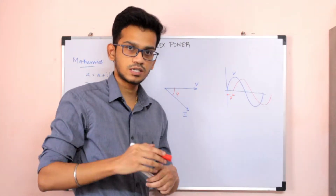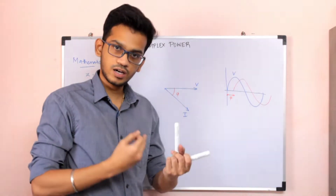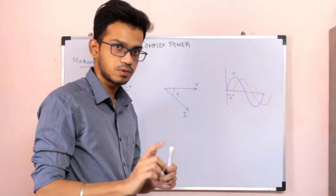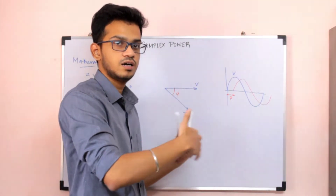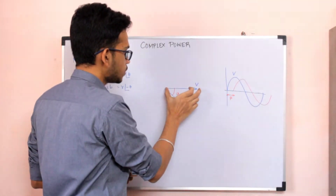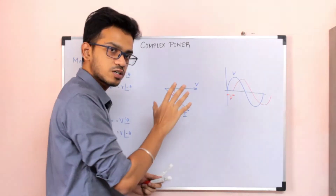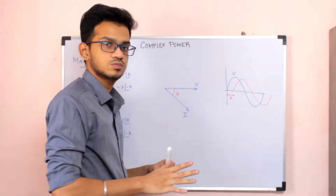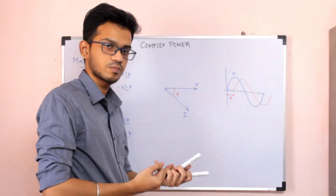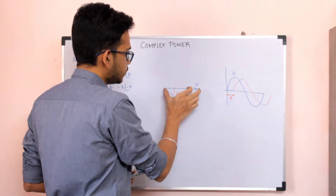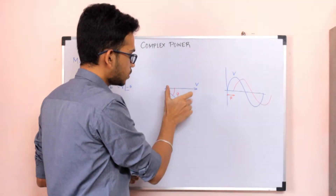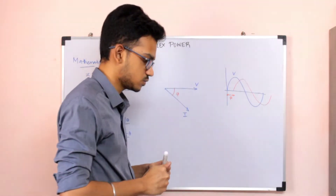Now let's talk about power — it can be real power, reactive power, or complex power. If we talk about power, we determine the power as a phasor factor. We change the voltage phasor, then change the current phasor, changing the angle between the two. You can get real power, reactive power, or complex power. The concept is: there is a V and an I, and there is an angle between the two.